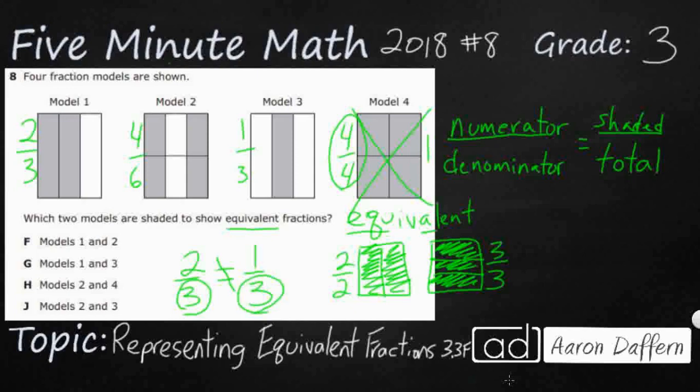This denominator is three. In model one, there are two pieces chosen. In model three, there is one piece chosen. So they can't be equal if they have the same denominator, if they have different numerators. They have different numbers chosen.